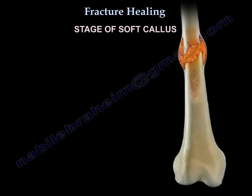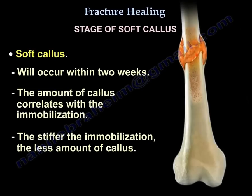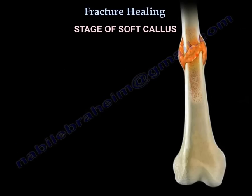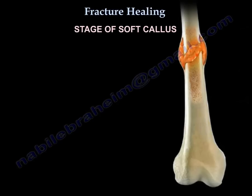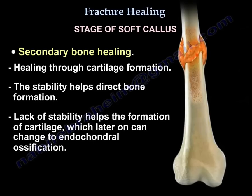Stage of soft callus: soft callus occurs within two weeks. The amount of callus correlates with immobilization — the stiffer the immobilization, the less callus. Flexible fixation will result in endochondral ossification and abundant callus. This is secondary bone healing, healing through cartilage formation. Stability helps direct bone formation, while lack of stability leads to cartilage formation, which can later change to bone through endochondral ossification.